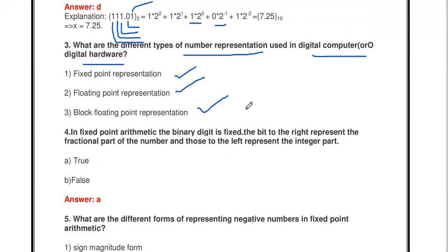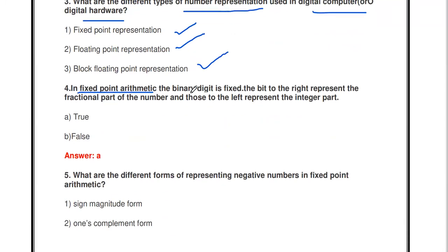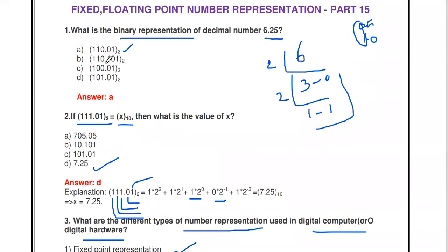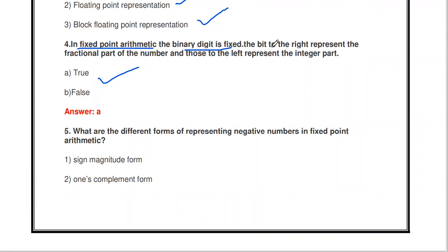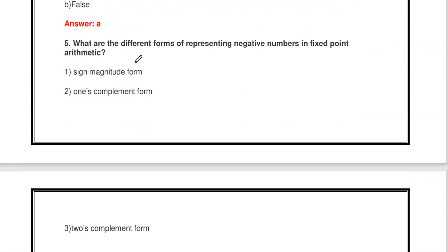Next question: in fixed point arithmetic, the binary point is fixed — the bits to the right represent the fractional part and those to the left represent the integer part. True or false? It's true. As seen with 6.25 in binary (110.01), the binary point is fixed; the left part represents the integer part and the right part represents the fractional part.